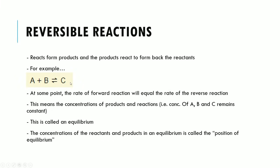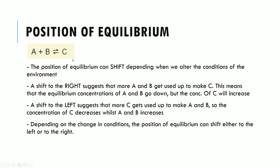The concentrations of the individual reactants and products at equilibrium is called the position of equilibrium. The position of equilibrium can shift depending on how we alter the conditions of the environment. A shift to the right means more of A and B is being used to make C, so the equilibrium concentrations of A and B decrease while the concentration of C increases. Oppositely, a shift to the left means more C is broken down to make A and B, so the concentration of C goes down while concentrations of A and B increase.